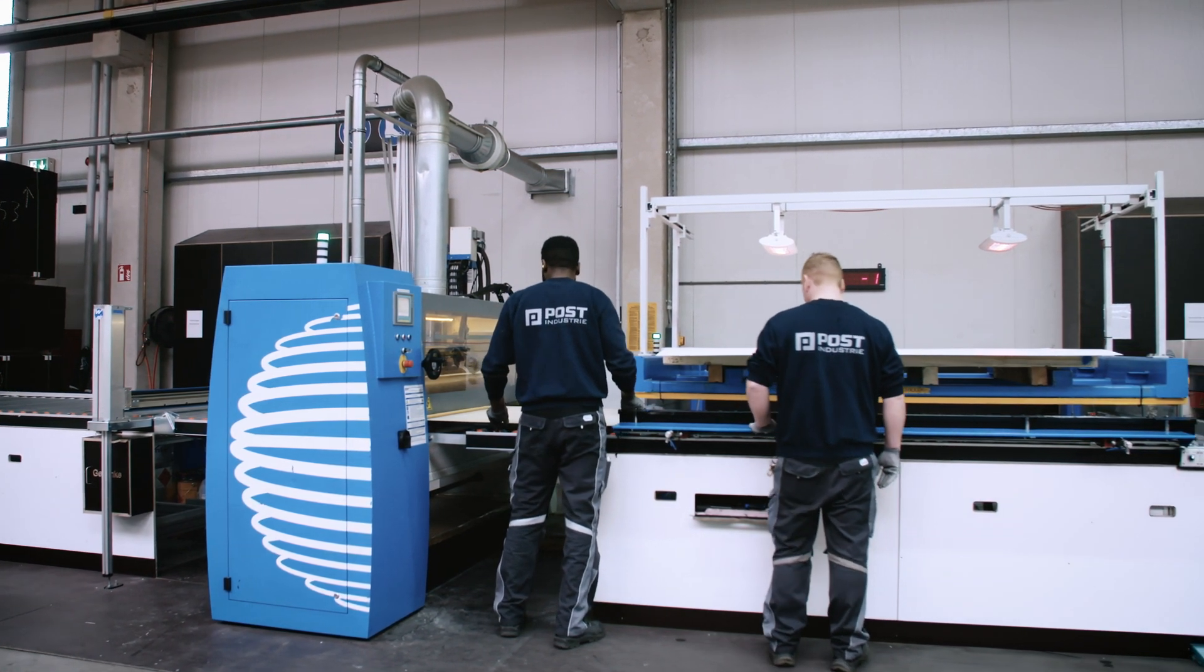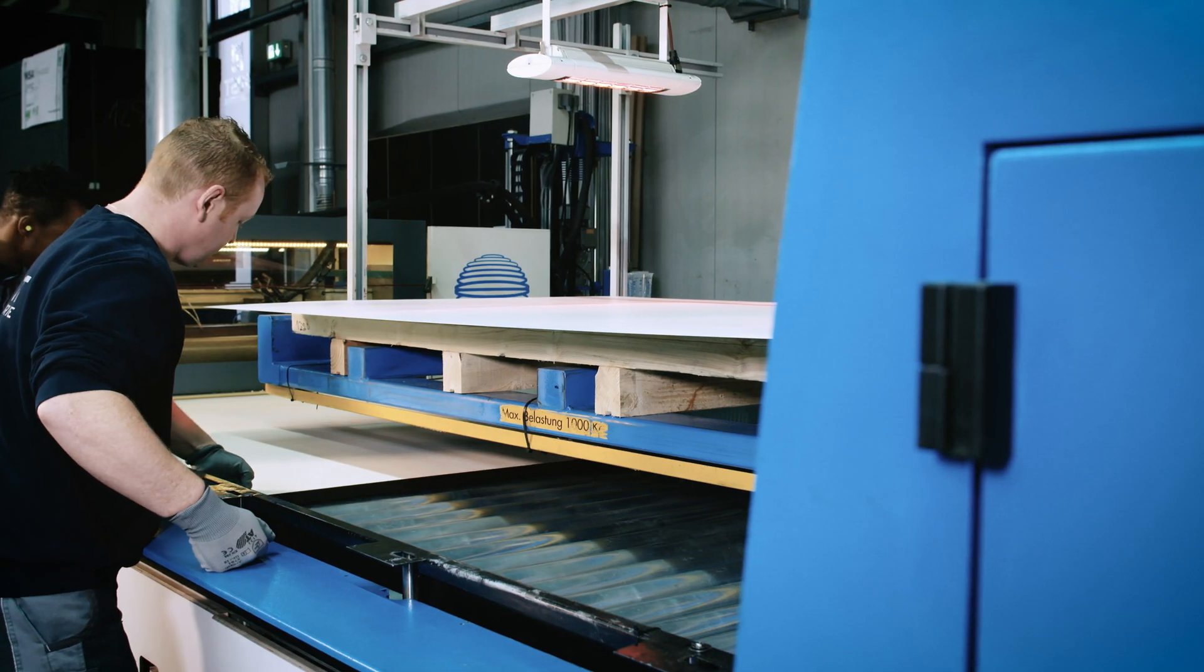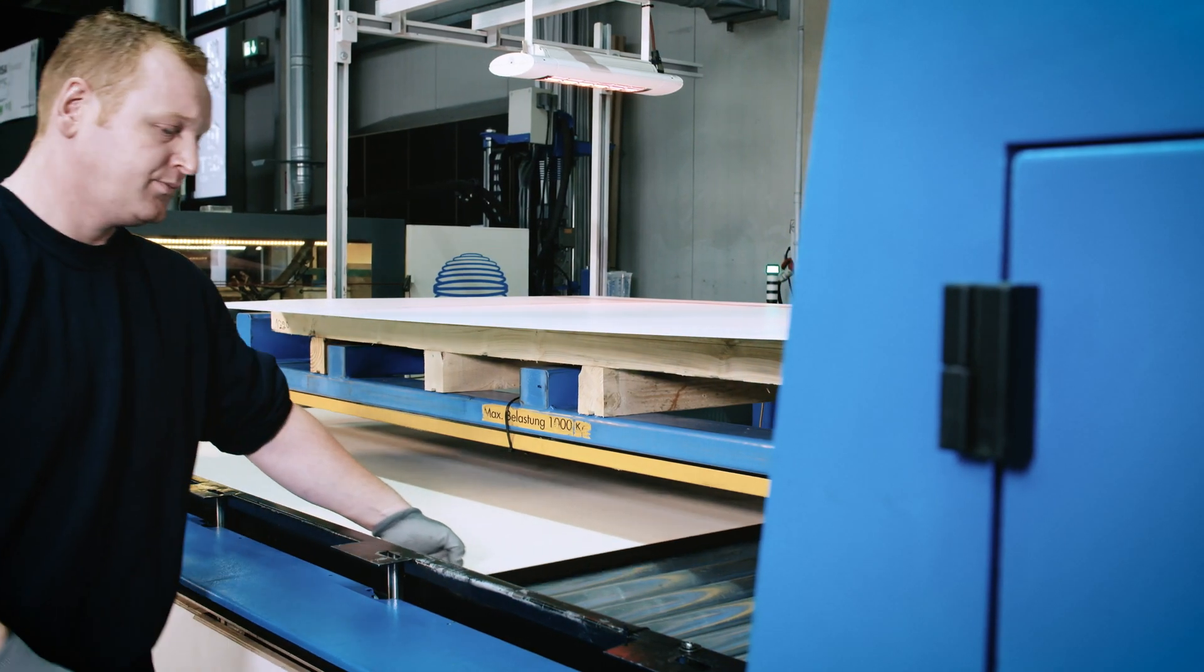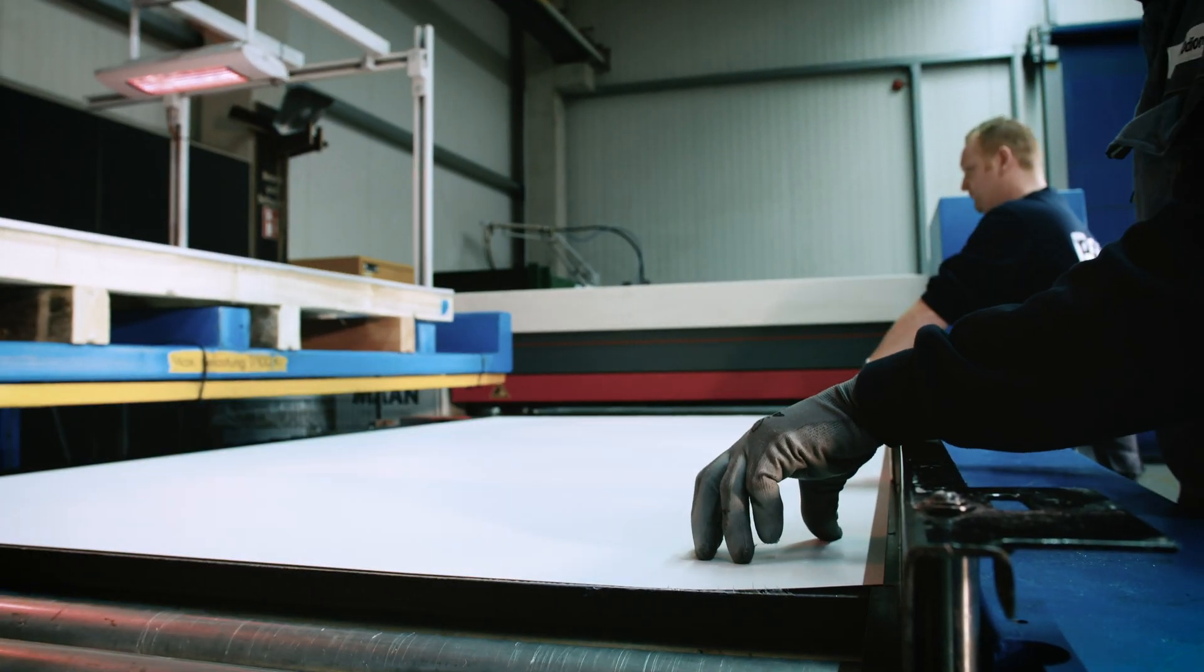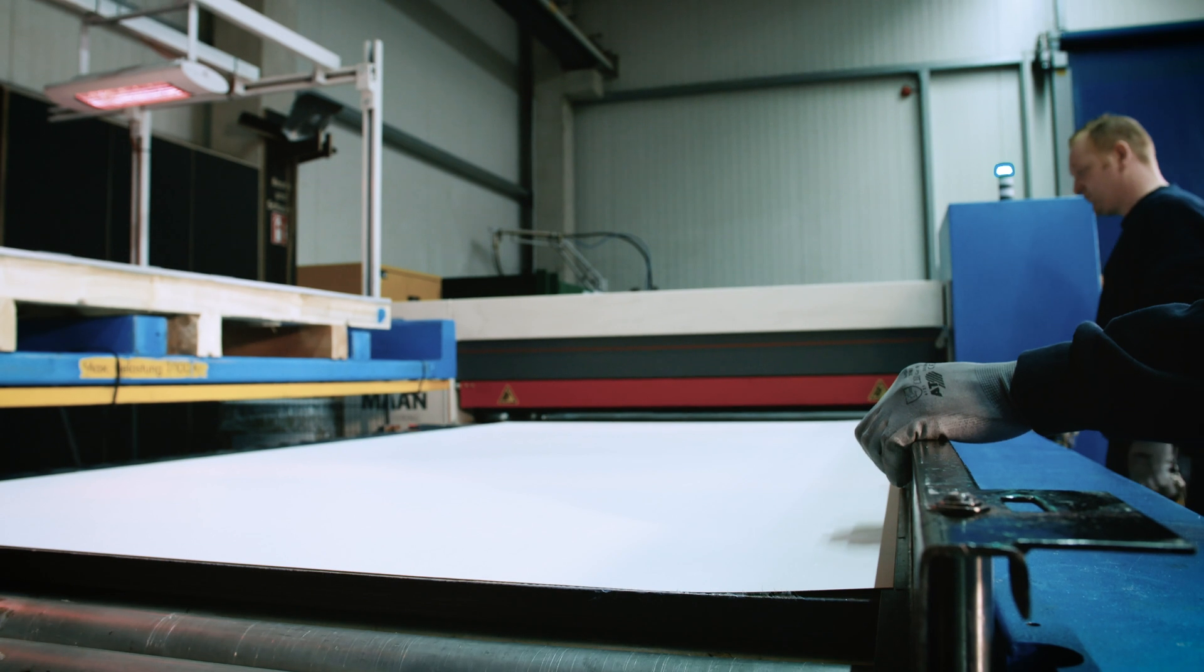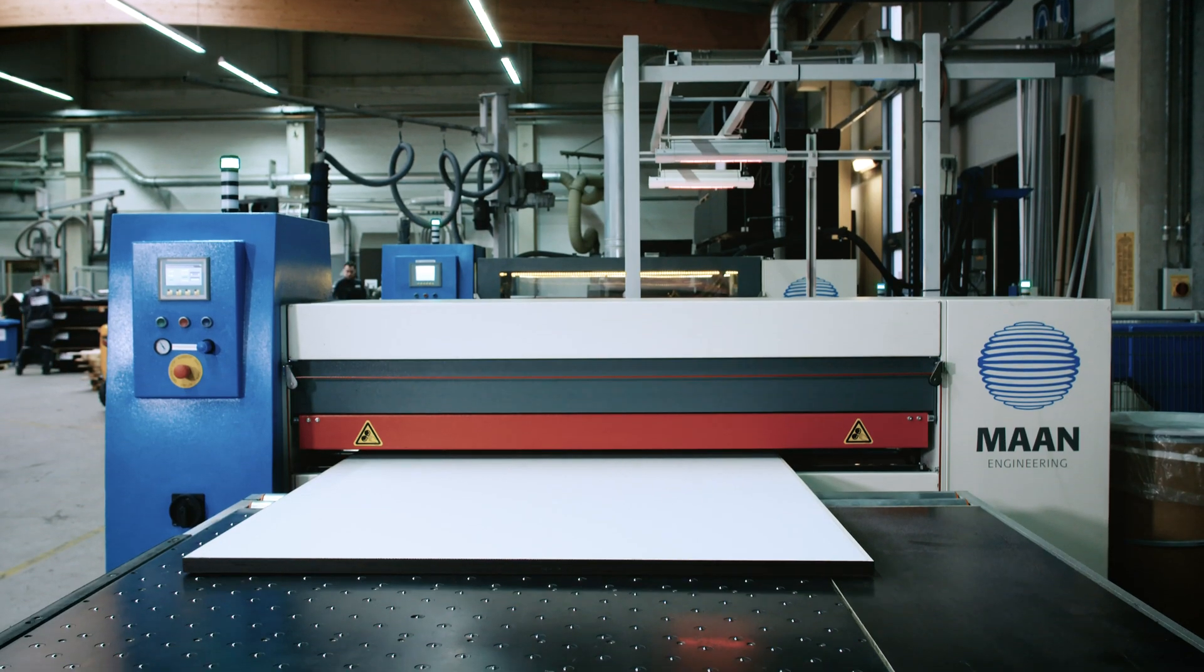After the adhesive has been applied full face to the substrate, it is laminated in the laminate index station or the sheet feeding station, after which the composite panel is compressed in the rotary laminating press. The two independently driven rollers result in the best quality panels.